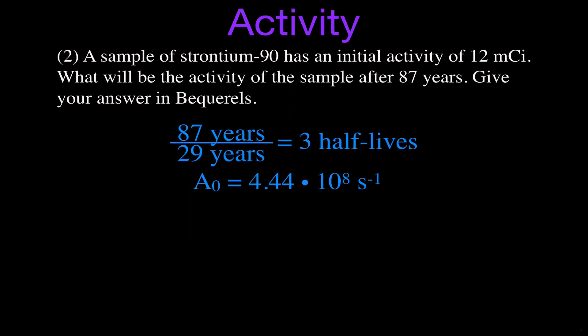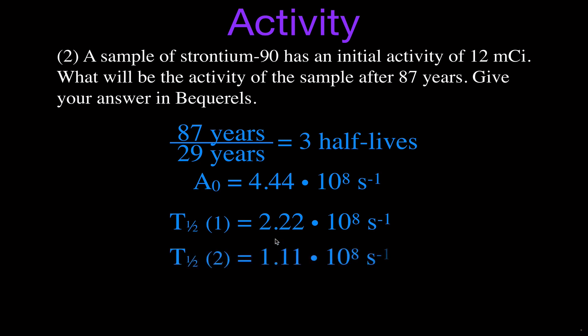We have three half-lives. We know that after each half-life we lose half of our sample, so the activity also goes down by half. After one half-life we divide by 2, after two half-lives we divide again, and after three half-lives we divide once more. So the final activity of strontium-90 after 87 years is one-eighth of the original 4.44 times 10 to the 8 Becquerels. That is the activity after three half-lives.